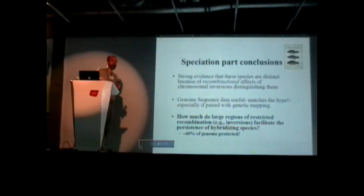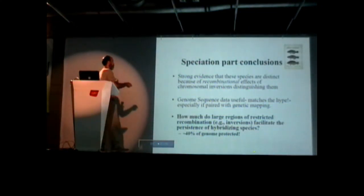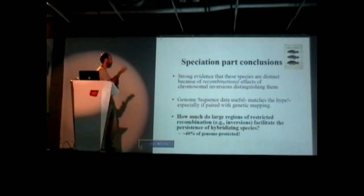So what do we take away from this? This is kind of the end of the speciation part. Well first, there's strong evidence that these species are distinct because of the effects of recombination. And specifically, the recombination effects of these inversions distinguish them. This is very compelling, I think. Other thing, this sounds silly, but genome sequence data were actually useful. That shouldn't be a surprise.